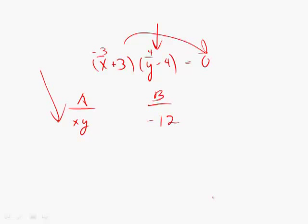Why? Well, you fell for the GRE's trap here. You don't want to rush in. You want to say, wait a second — are these the only two values that are possible? Think of it this way: if y equals 4, that means the value in the right-hand parenthesis is equal to 0, so no matter what x is, if y is 4, the product is going to be 0. So x could be 4, x could be negative 4 — it doesn't matter, it could be anything. And because it could be anything, this value over here could be anything; it doesn't have to equal negative 12.